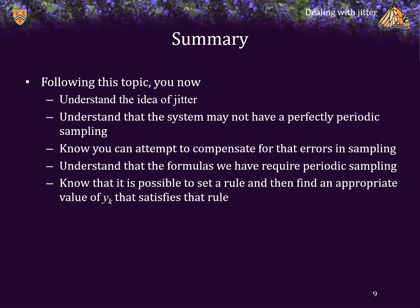Following this topic, you now understand the idea of jitter. So, for example, you understand that a system that is theoretically sampling data periodically may not be able to do so exactly. And there may be errors in the readings. You know that we can attempt to compensate for such errors in sampling time. And you know that the reason for this is because all of the formulas we have used up until now require periodic sampling.